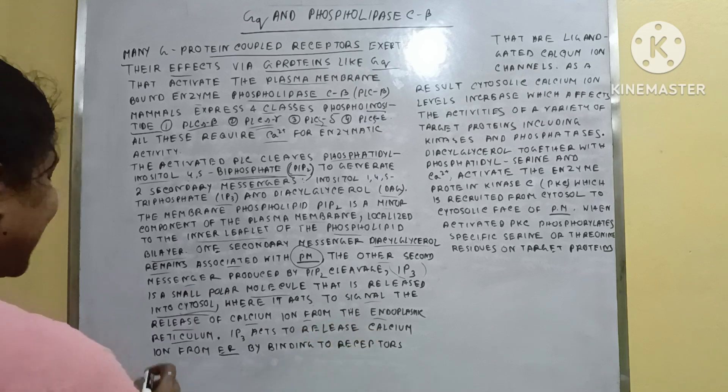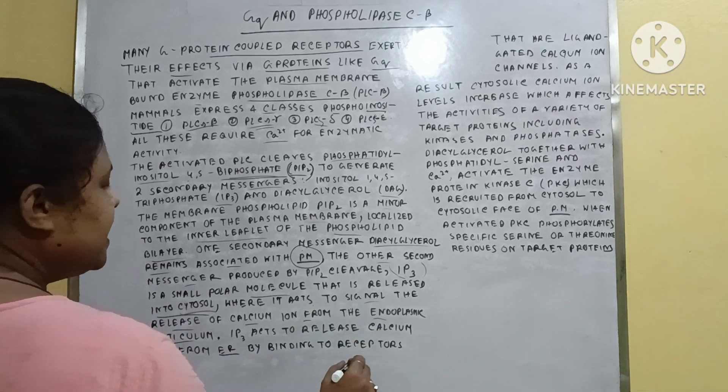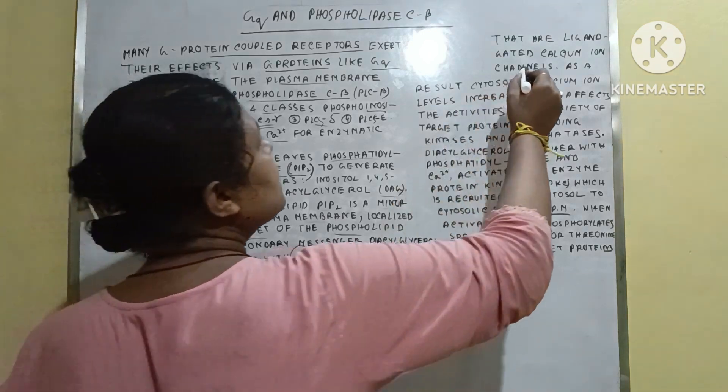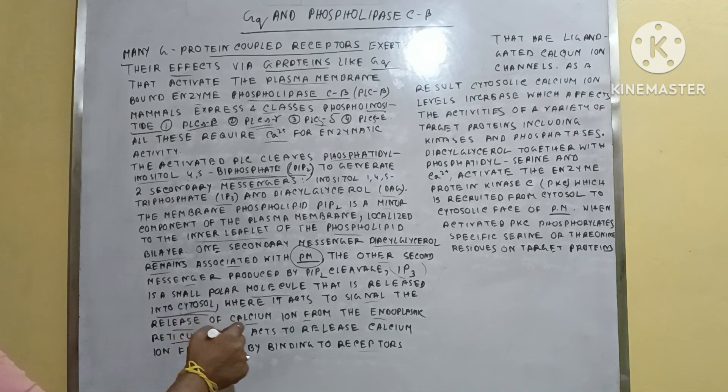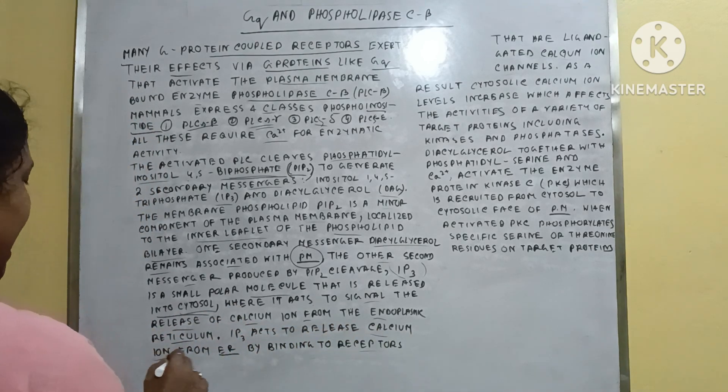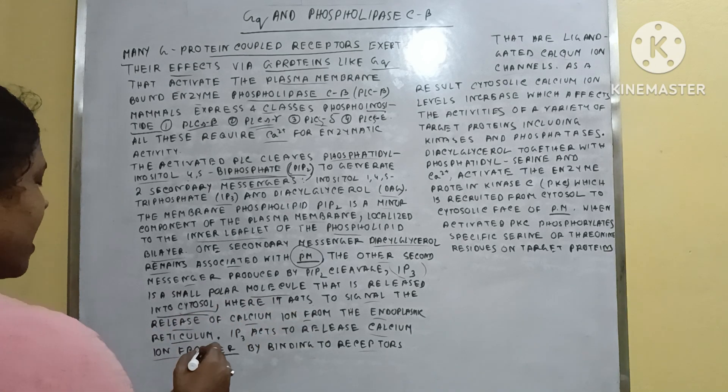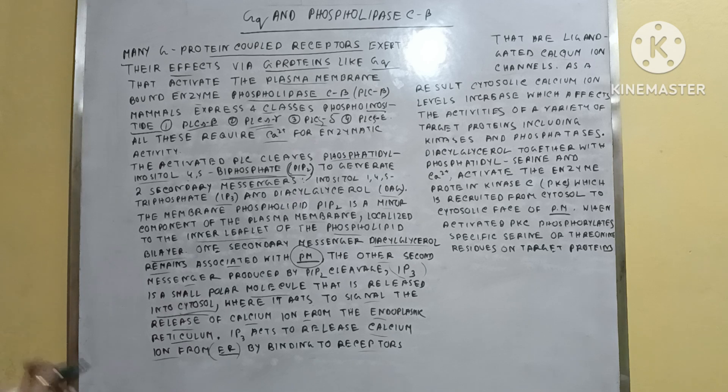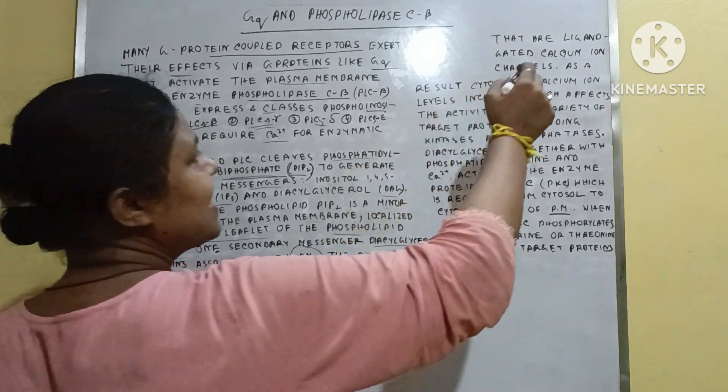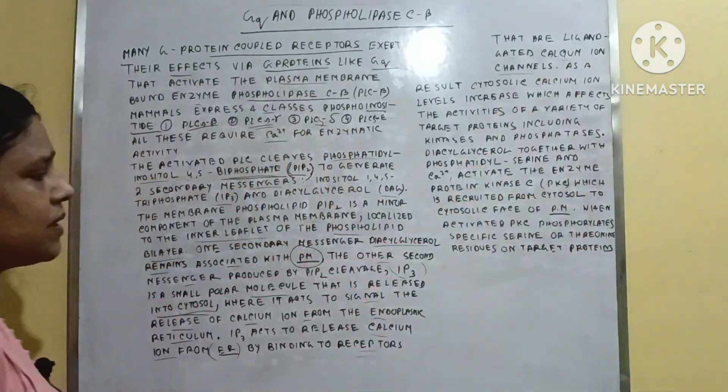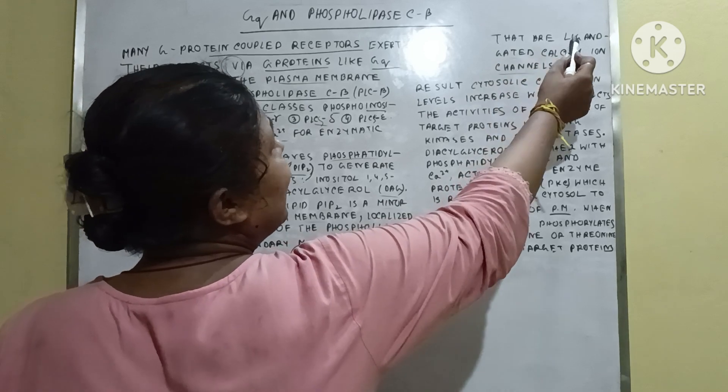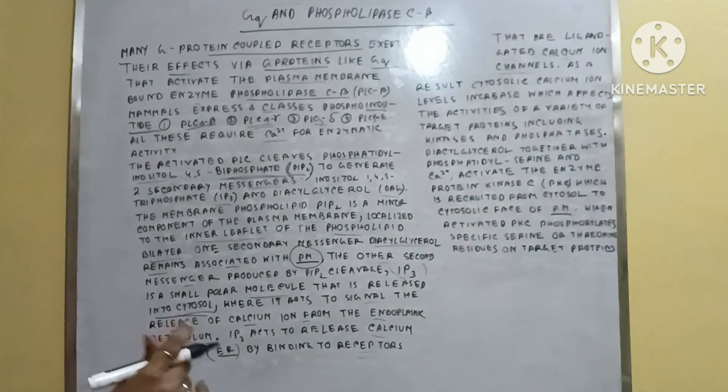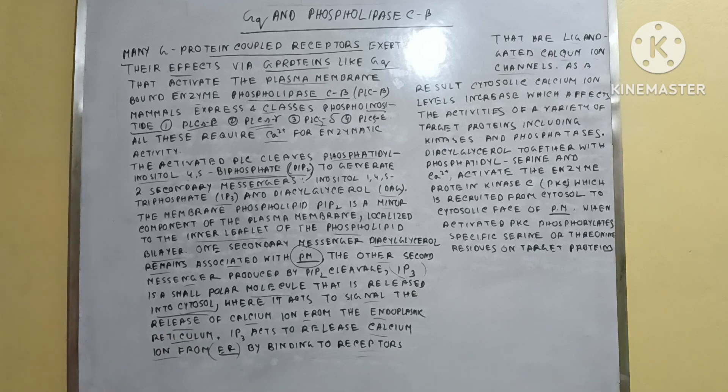IP3 acts to release calcium ion from ER by binding to receptors that are ligand-gated calcium ion channels. If IP3 binds to the receptor ligand-gated calcium ion channel, then calcium is released from the ER.